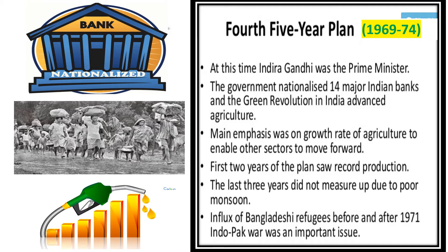At this time, Indira Gandhi nationalized 14 major Indian banks in 1969. These were: Allahabad Bank (now Indian Bank), Bank of Baroda, Bank of India, Bank of Maharashtra, Central Bank of India, Canara Bank, Dena Bank (now Bank of Baroda), Indian Bank, Indian Overseas Bank, Punjab National Bank, Syndicate Bank, UCO Bank, Union Bank of India, and United Bank of India.